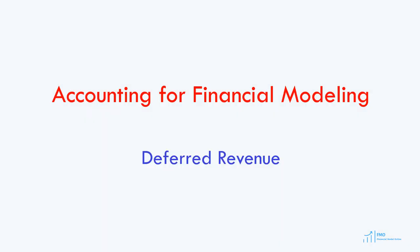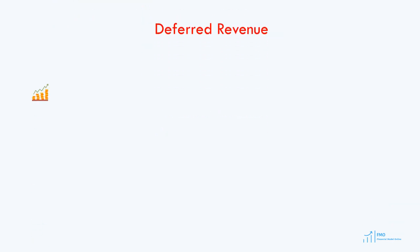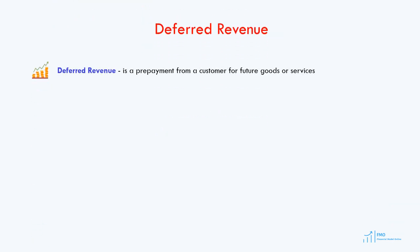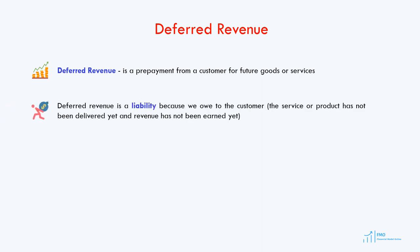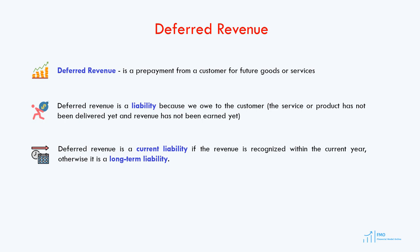Welcome back. In this lesson we will go over the deferred revenue liability. Deferred revenue is a prepayment from a customer for future goods or services. It is a liability because we owe the customer — the service or product has not been delivered yet, and therefore we cannot recognize the revenue. We collected the cash but the products will be delivered in the future, so until that happens we have a liability to deliver the product or service. Deferred revenue can be a current liability or a long-term liability.